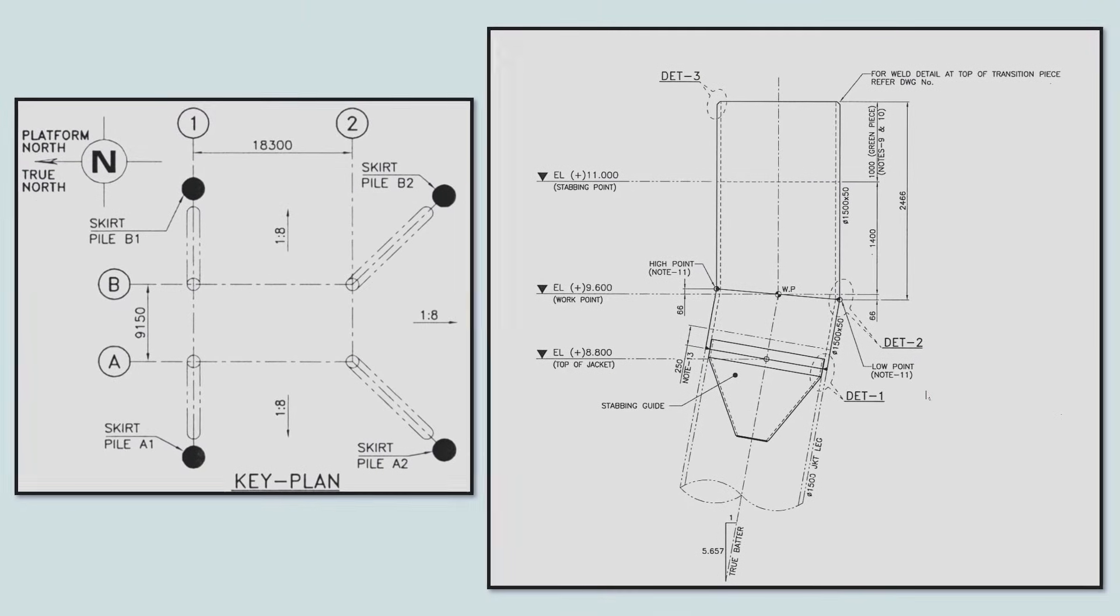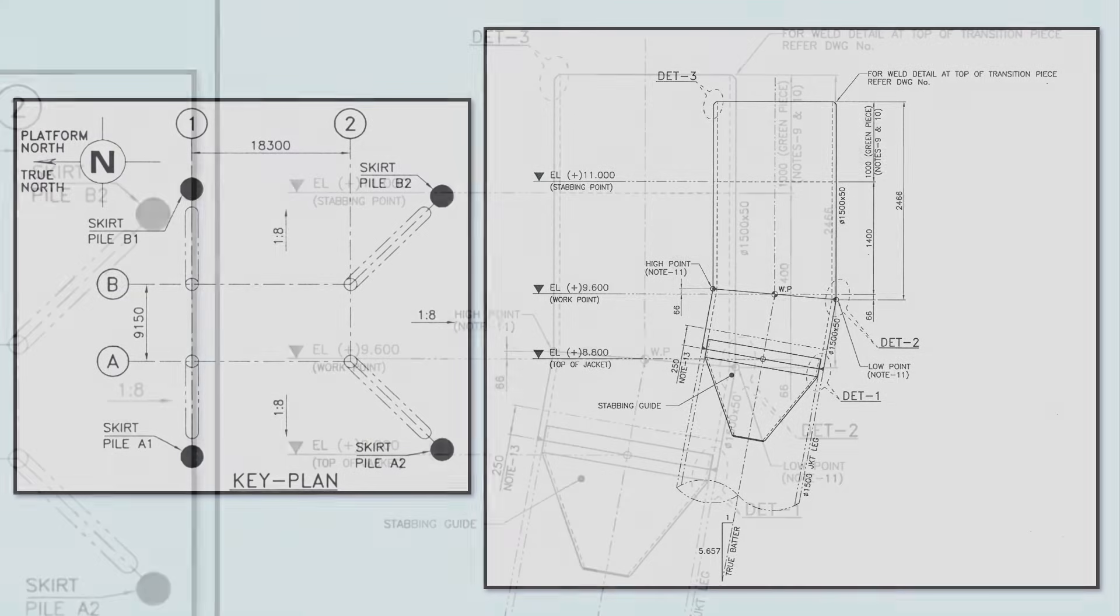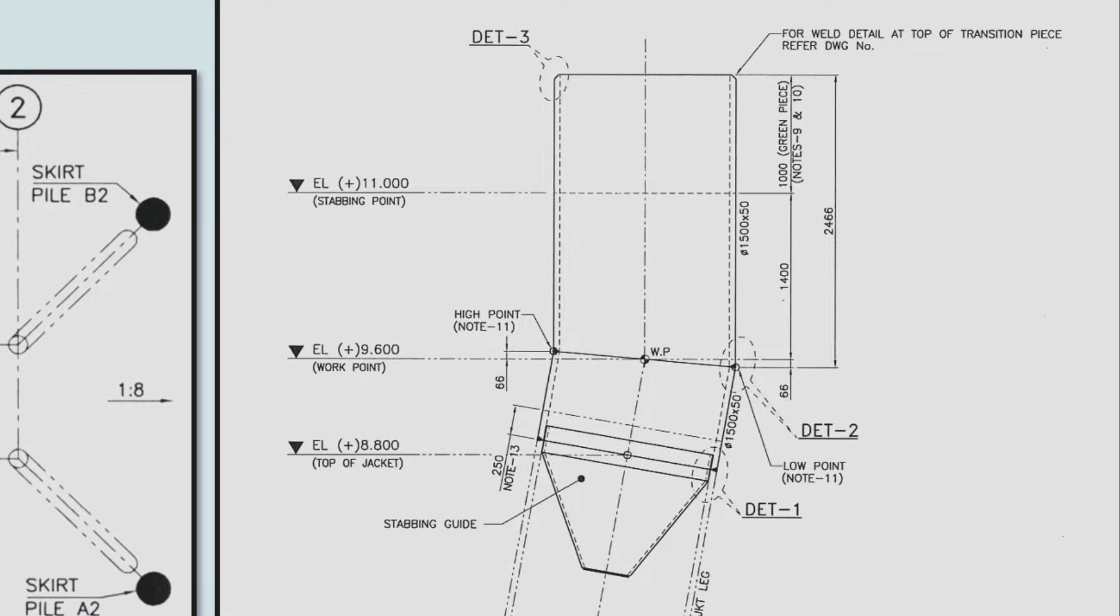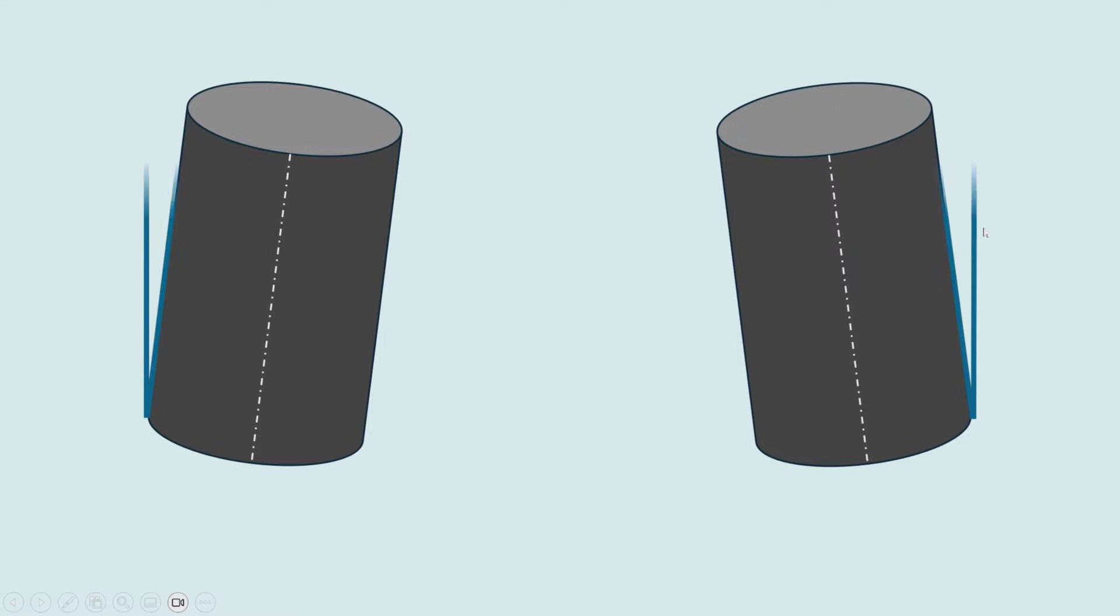In this drawing, you can see the elevation is marked and the transition piece is also shown. We see that work point and topside stabbing point elevation is marked. So here I have two batter leg piles.